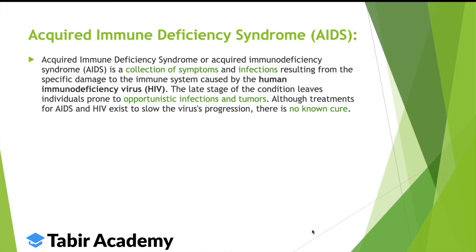Acquired Immune Deficiency Syndrome — AIDS — is a syndrome, meaning a collection of different symptoms and infections. It is not itself a virus. It is caused by Human Immunodeficiency Virus, HIV. Once infecting the body, HIV causes AIDS. In the late phase of the disease, people get infections not common in healthy persons, or they develop tumors because of the virus. The virus damages the immune system, impairing it so that any infection causes severe illness. It can also be fatal.